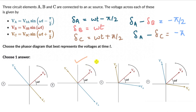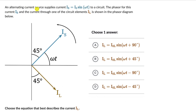Let's look at one more. Here we have an alternating current source that supplies current Is, which is equal to I0 sin(omega t), to a circuit. The phasor for this current Is and the current through one of the circuit elements Il is shown in the phasor diagram below. We need to choose the equation that best describes the current Il.